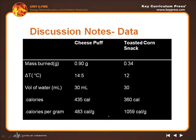Now if we look at the data, which one gives off more energy - a cheese puff or a toasted corn snack? Based on this data, 483 or 1,059? 1,059 per gram. Per individual piece it might be different, so per gram can relate them to one another. So you want to use the calories per gram to compare them.